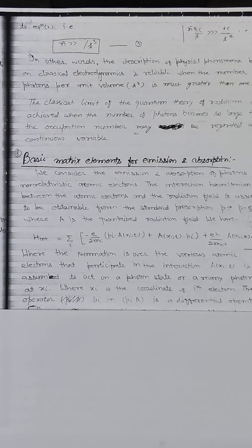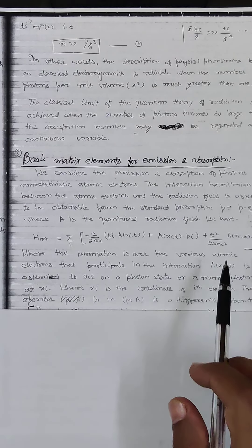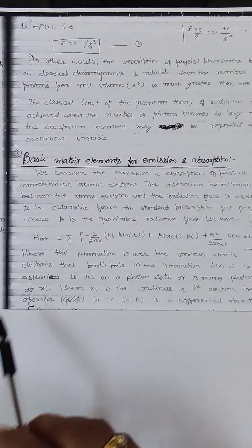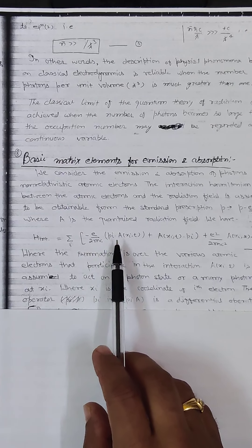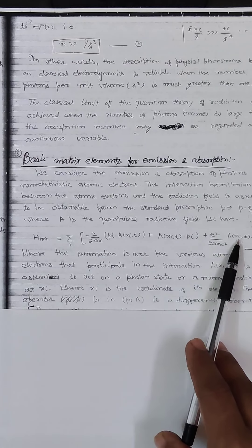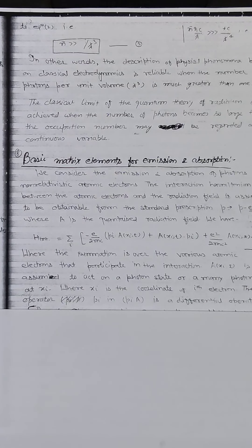Let us first discuss the basic matrix elements for emission and absorption. We consider the emission and absorption of photons by non-relativistic atomic electrons. The interaction between the atomic electrons and the radiation field is obtained from the standard prescription momentum p → p - e/c · A, where A is the quantized radiation field. The interaction Hamiltonian is given by summation over i of: -e/(2mc) (p_i · A + A · p_i) + e²/(2mc²) A · A, where the summation is over the various atomic electrons.